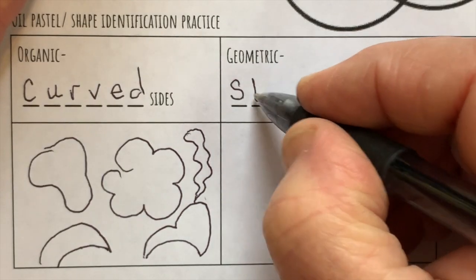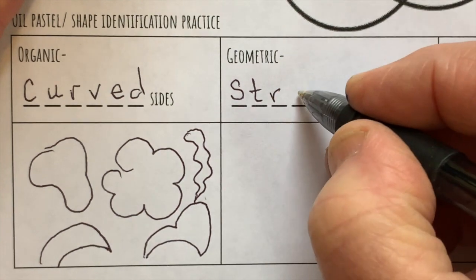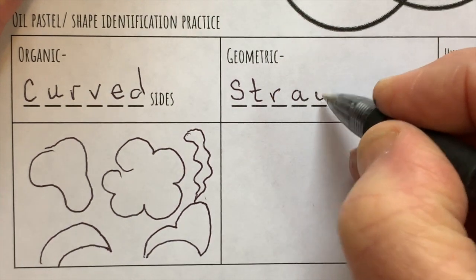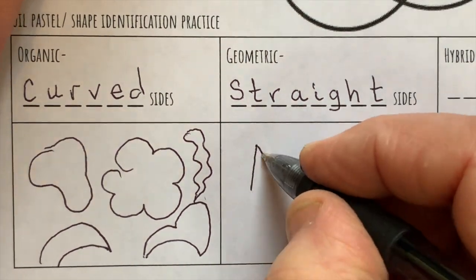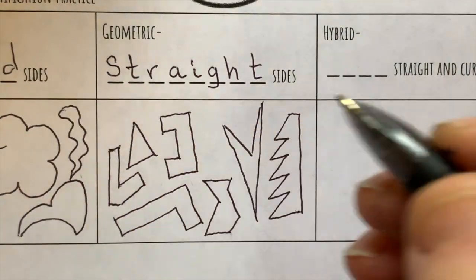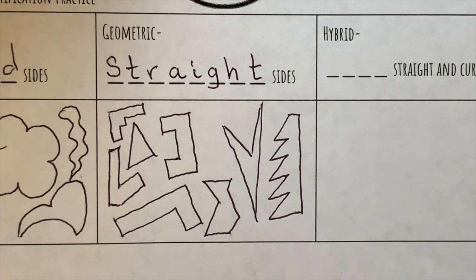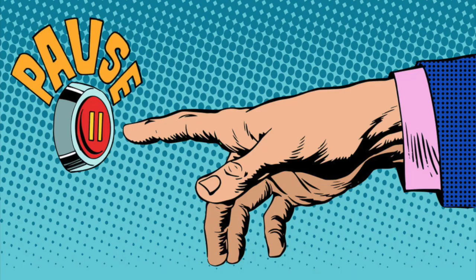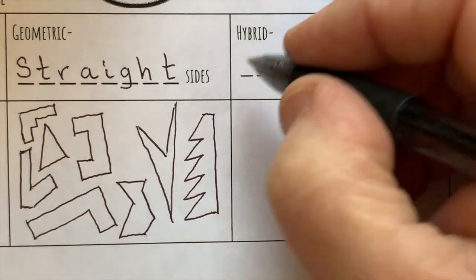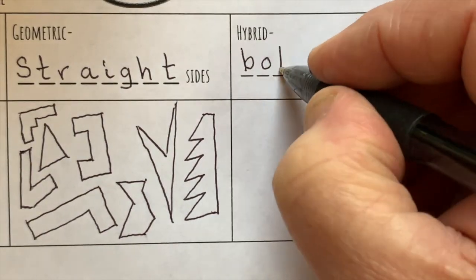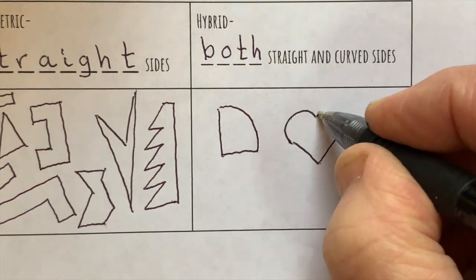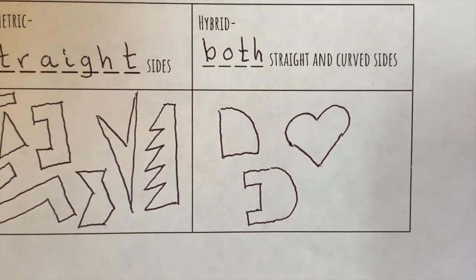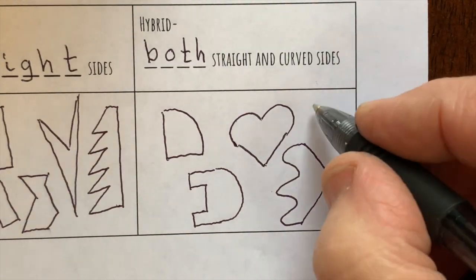The term geometric means straight-sided shapes. In the area below, make lots of shapes that have straight sides. Again, make up your own versions. You don't have to copy mine. If a shape has both straight and curved sides, we call it a hybrid shape.